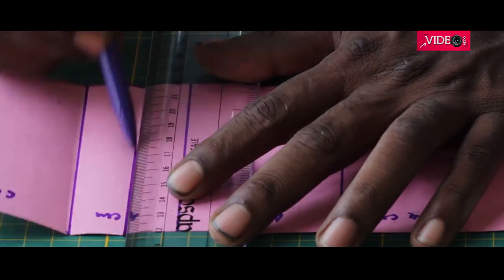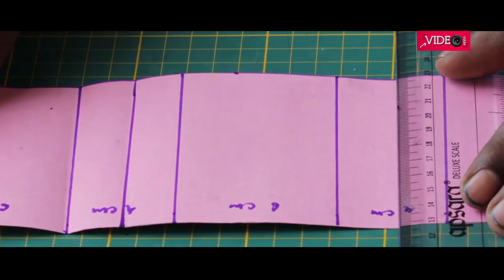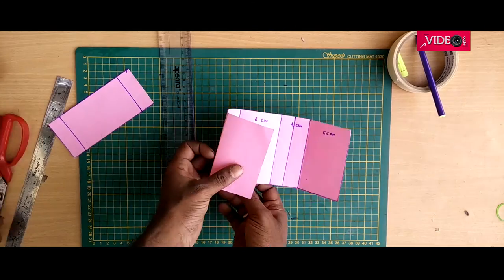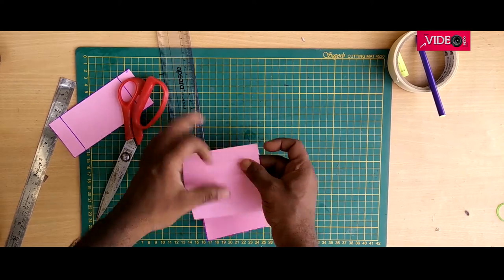I am marking a center line in the 4 centimeters column and giving it a light fold. Note this will be folded on the opposite side. When it's folded it should look something like this.